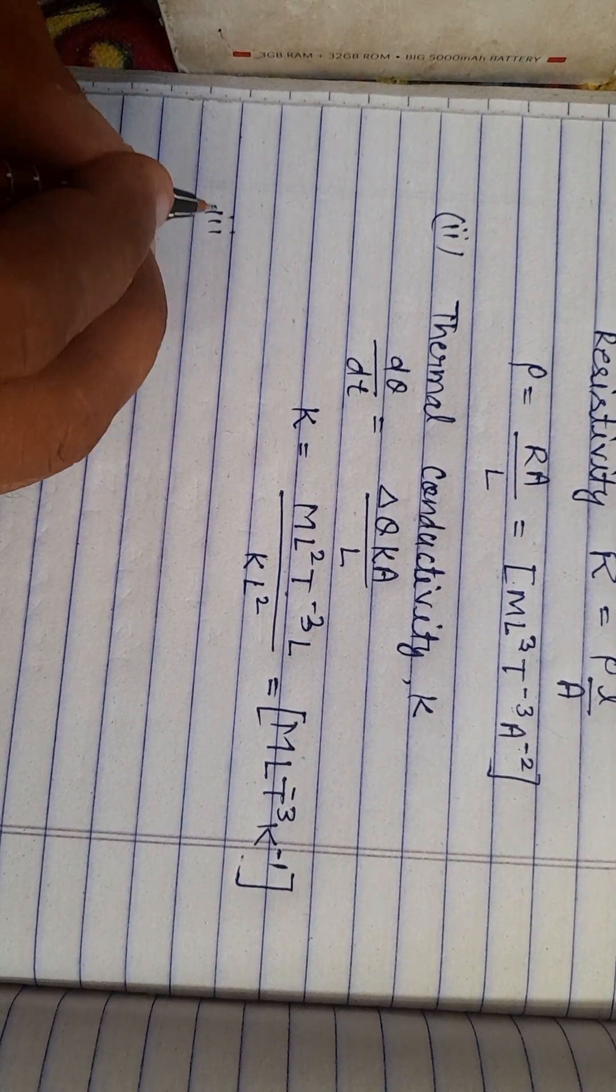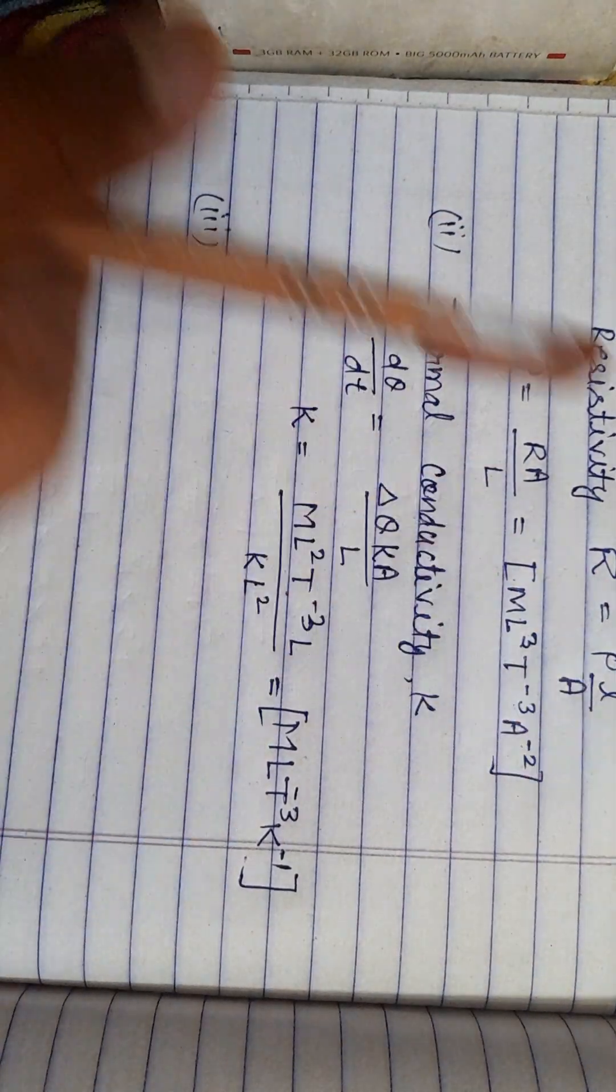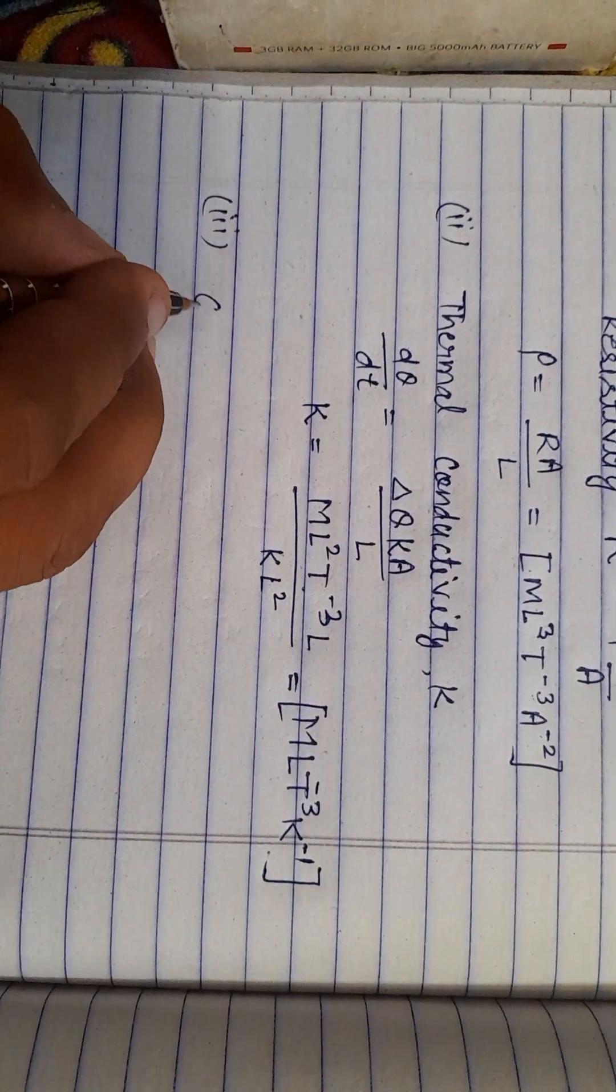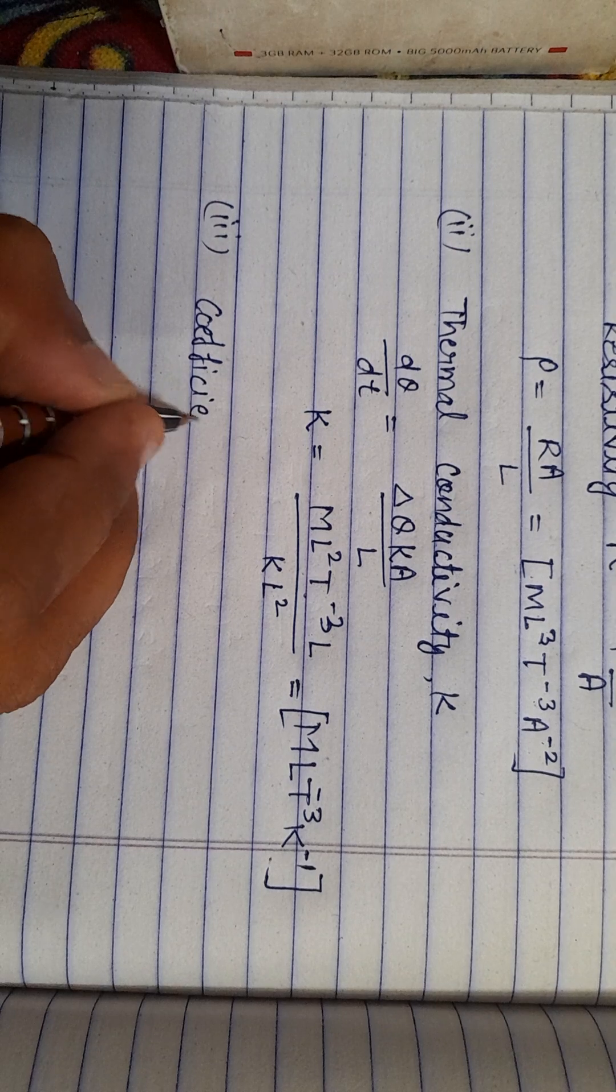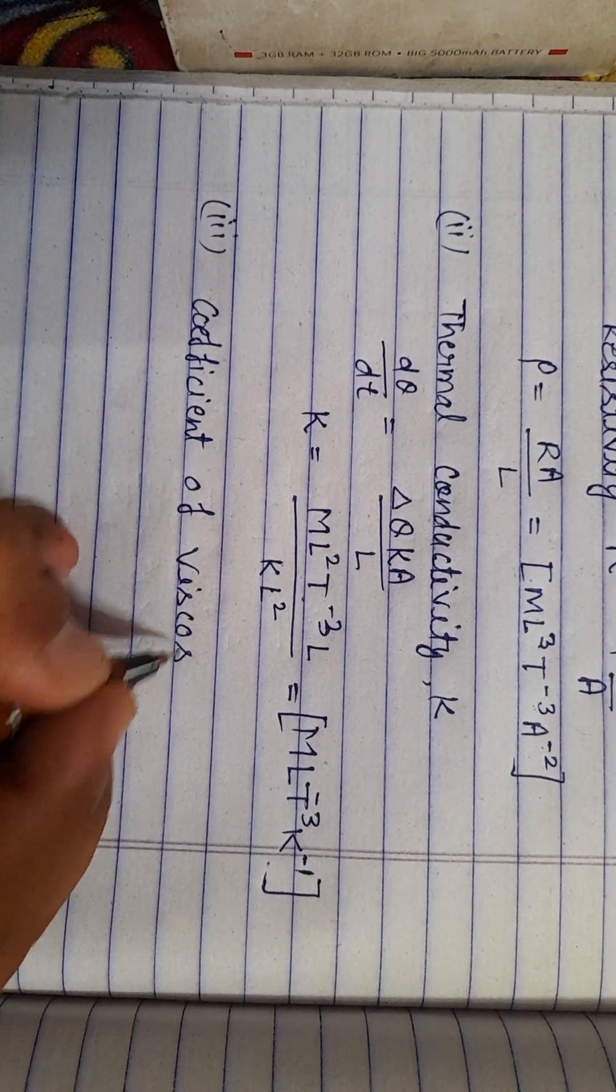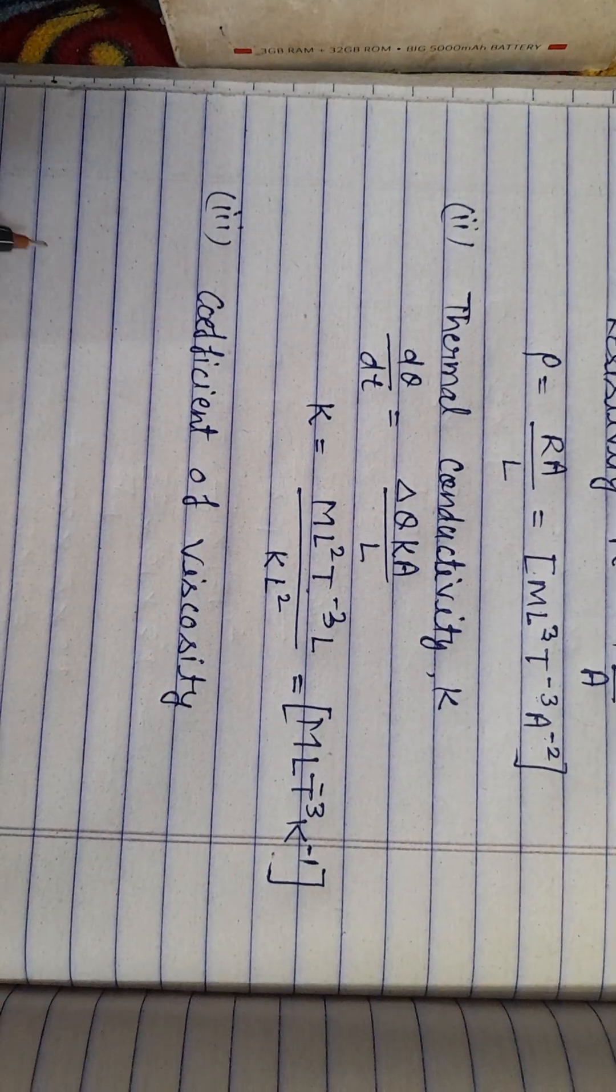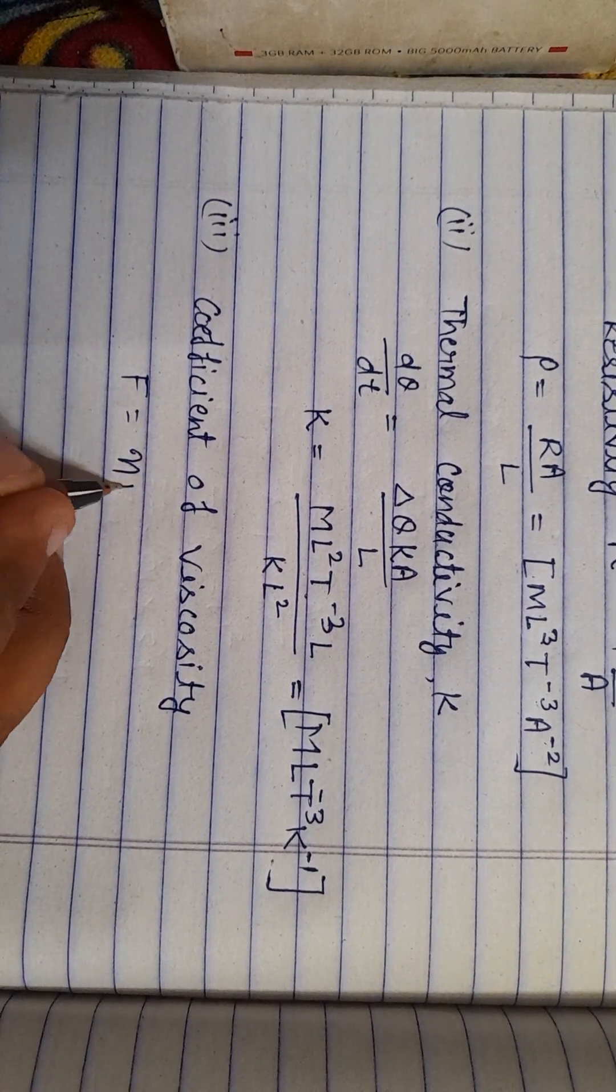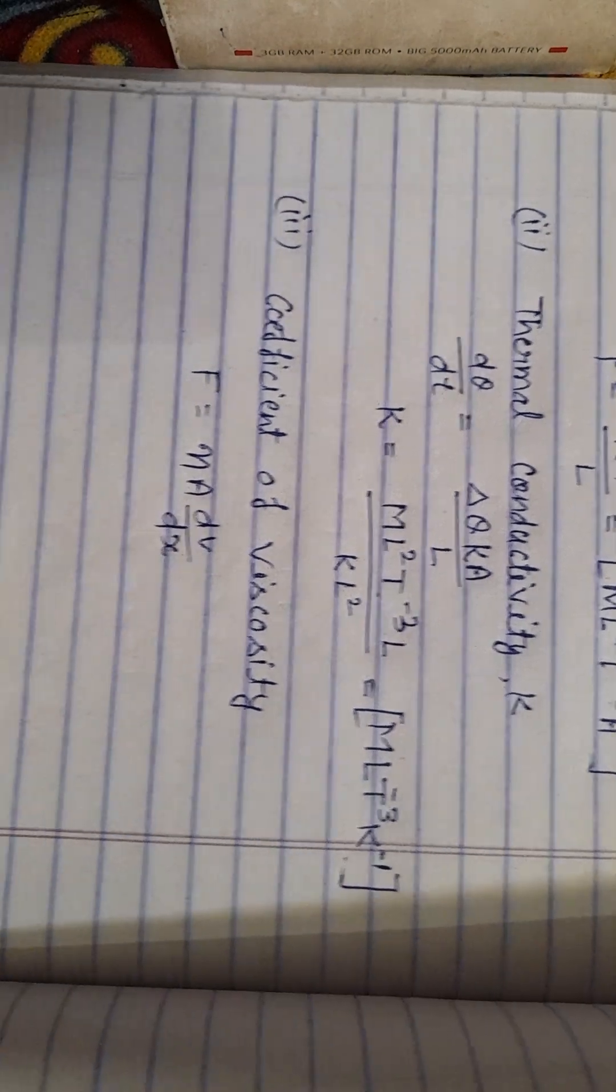Now I am finding the dimension of coefficient of viscosity. The formula for coefficient of viscosity is F equals eta A D V upon D X. This is the formula, you already know this.